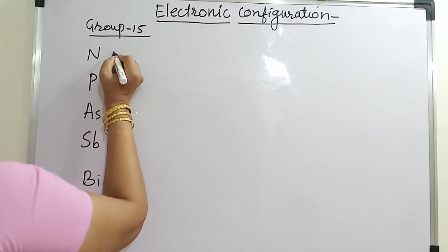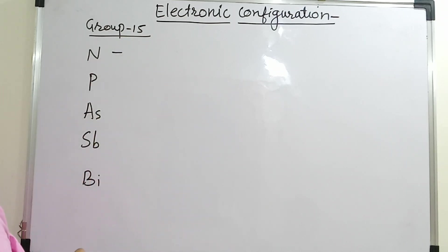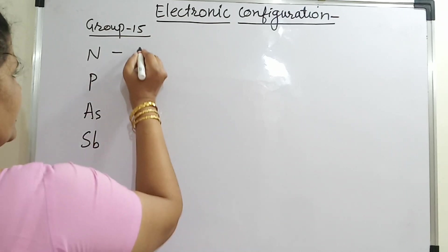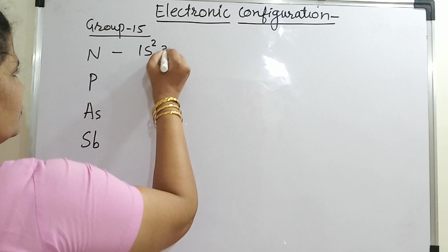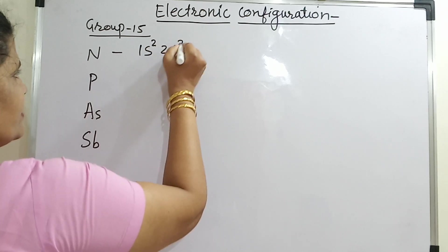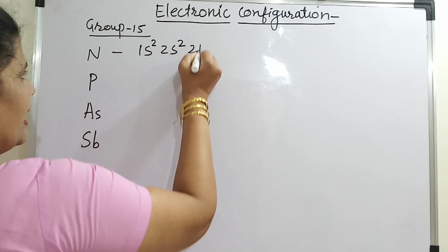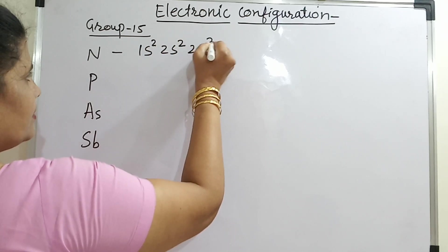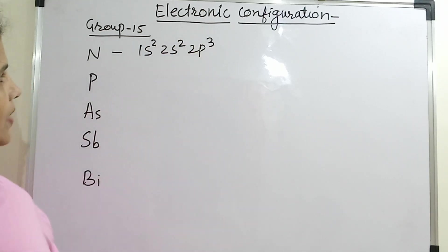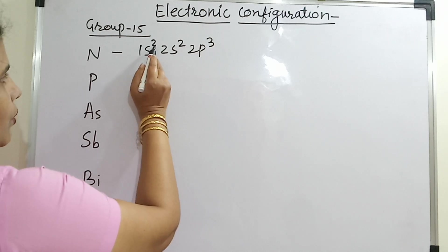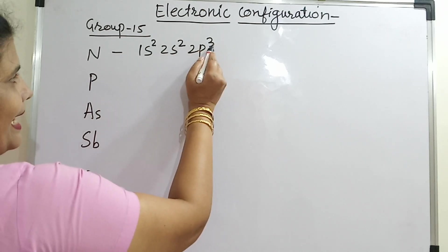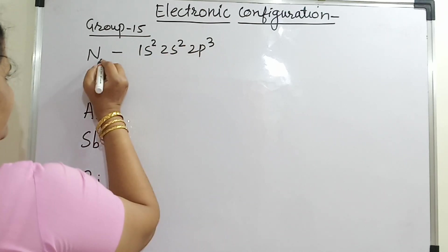You know the electronic configuration for nitrogen. It is 1s2, 2s2 and 2p3. If you count the electrons — 4 and 3 — that gives 7.